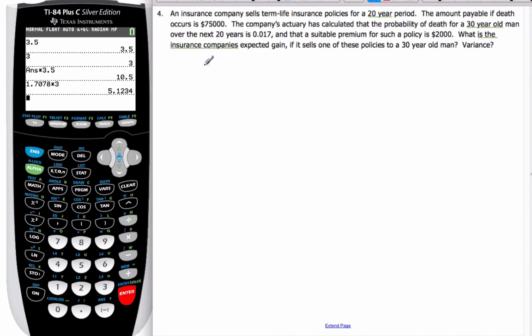All right so let's do an example here. An insurance company sells term life insurance policy for a 20 year period. The amount payable if death occurs is $75,000. The company actuary calculated the probability of death for a 30 year old man over the next 20 years to be 0.017, and the pseudo premium for such is $2000. It's a one-time fee. What's the insurance expected to gain if it sells one of these policies to the 30 year old man? And the variance as well.